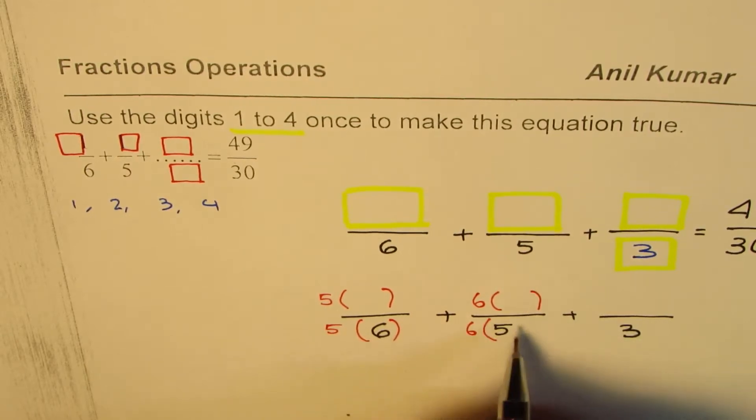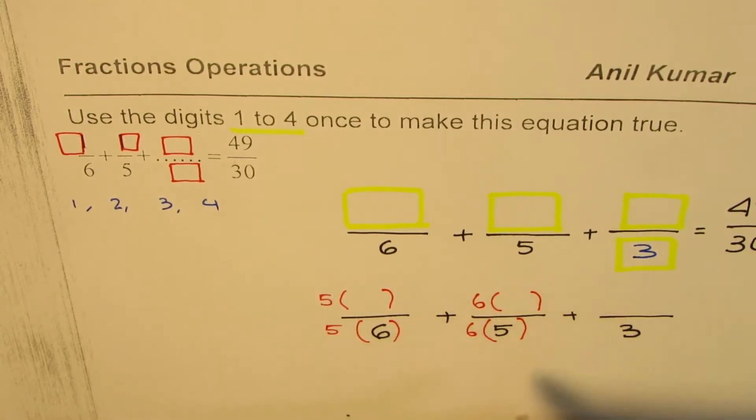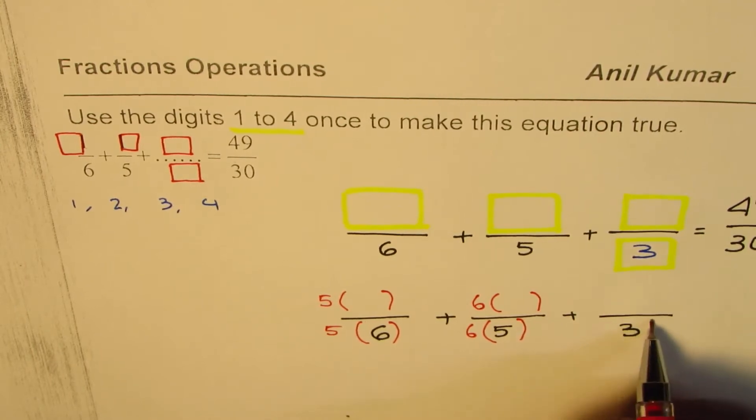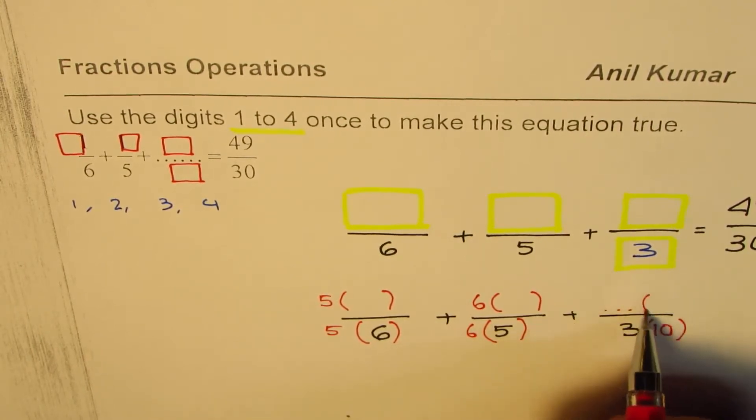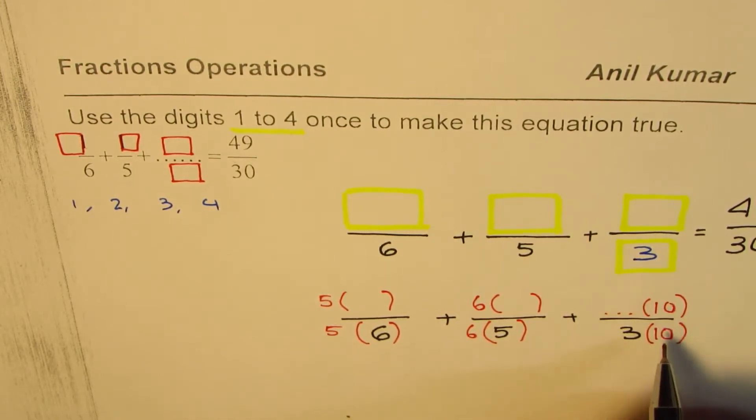Here I have 6 times some number, and 6 times 5 is going to give me 30. In this case I can multiply this by 10. So I'll say some number times 10.